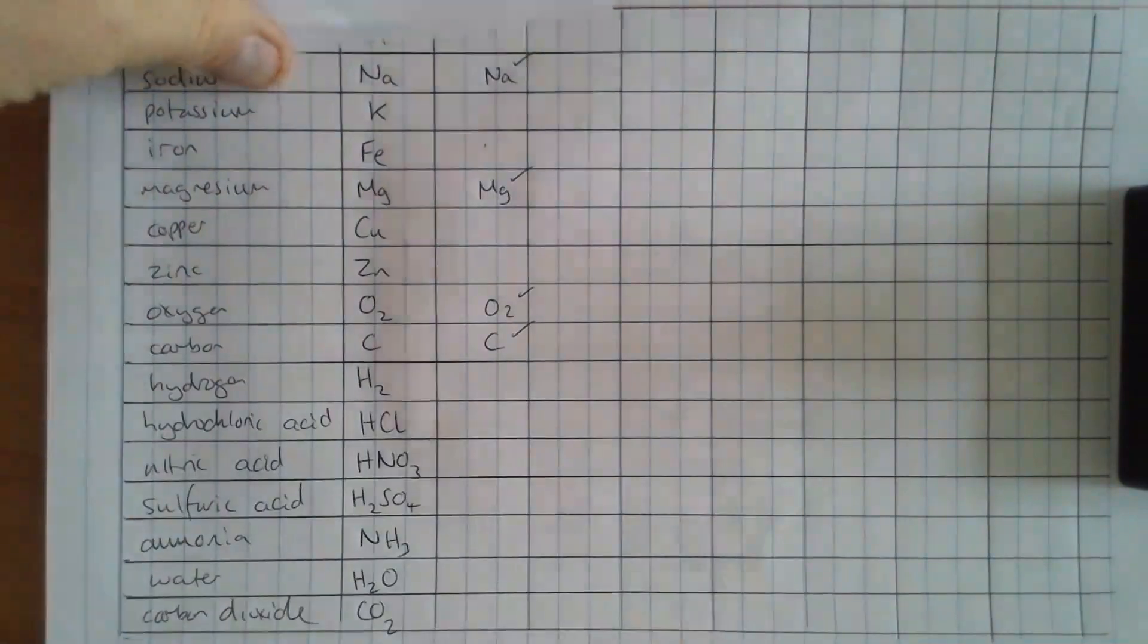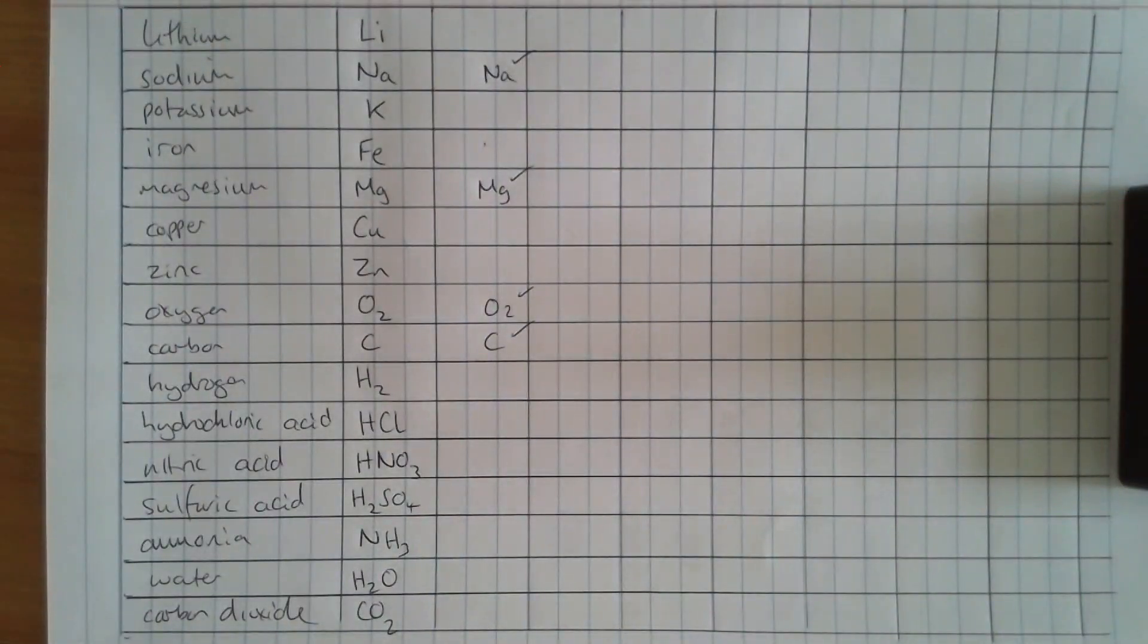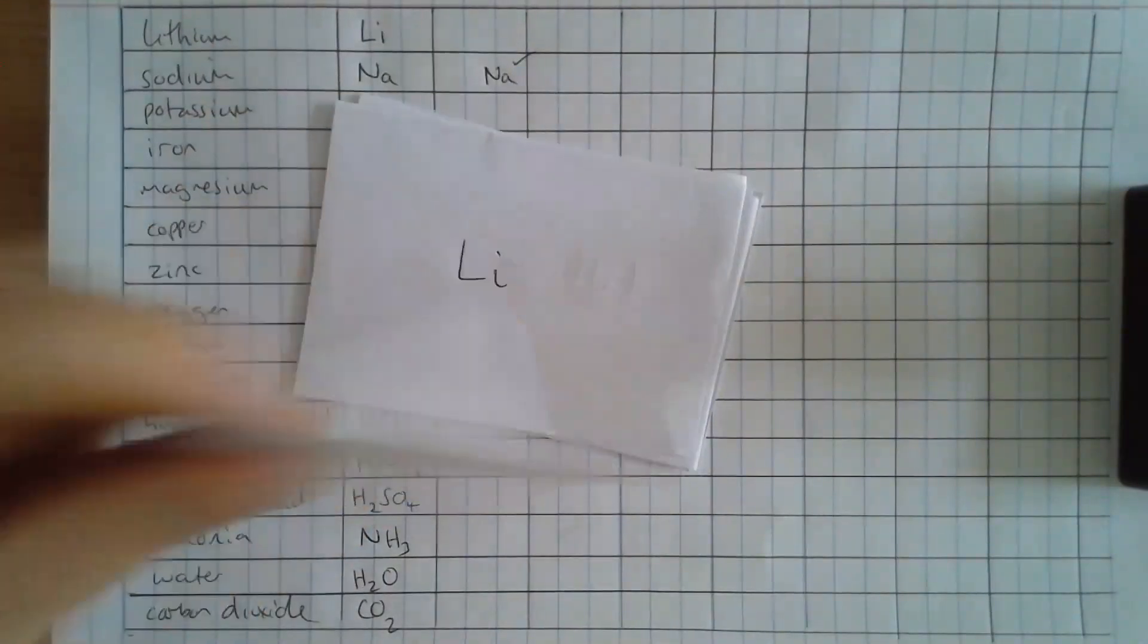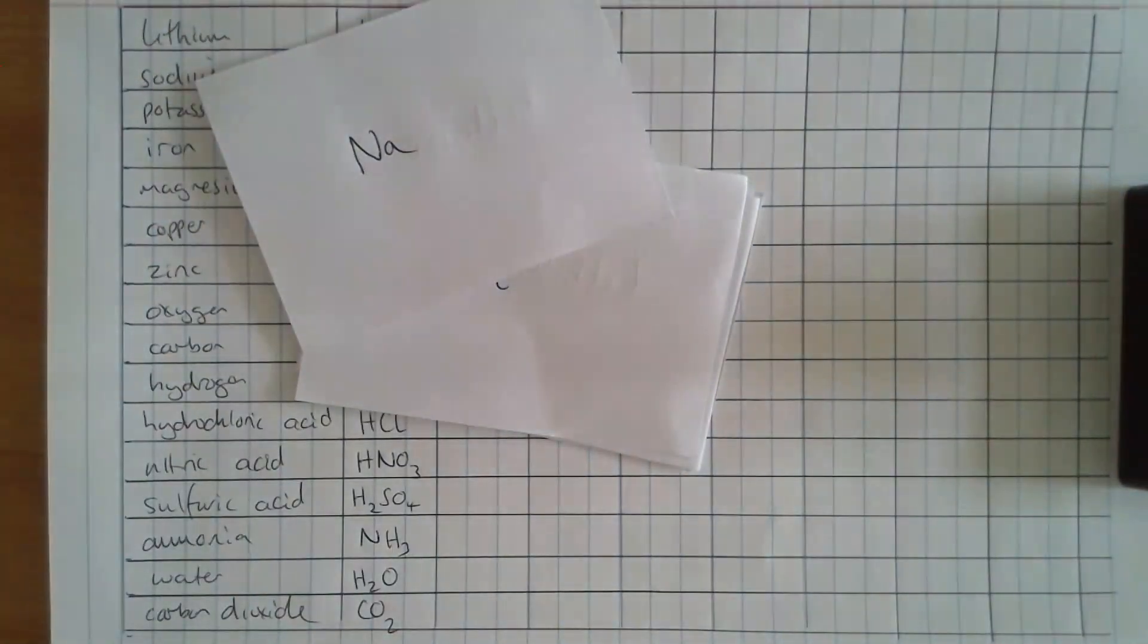Either prep up a sheet like this, ready to do the look, cover, write, check, repeat. Or make 16 flashcards with the name on one side and the symbol or formula on the other side.